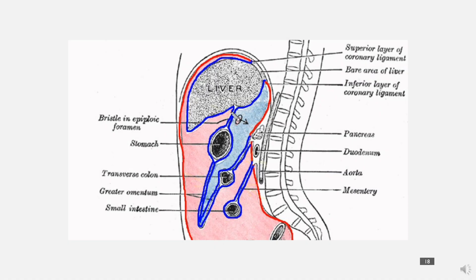Looking at this view, it shows how the greater omentum actually works. The stomach is here, the omentum comes down and then loops back up and connects onto the colon. In this way it covers the whole of the front, so if there is trauma to the front it provides some protective function.